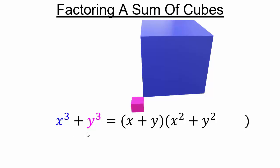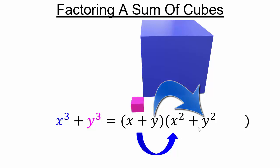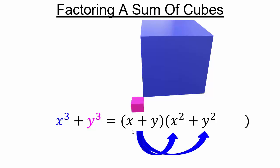We know x cubed plus y cubed — we want to factor it as x plus y times something. x multiplied by x squared gives x cubed, and y times y squared gives y cubed. But with the distributive property we get additional terms like x times y squared, giving xy squared. There's no xy squared on the left side, so we need an additional term such that y times that quantity cancels x times y squared — meaning we need a negative xy in the second factor.